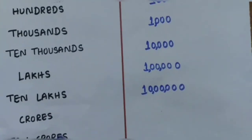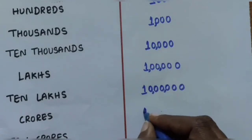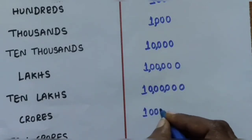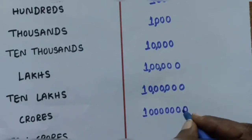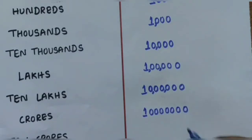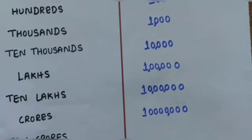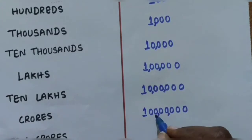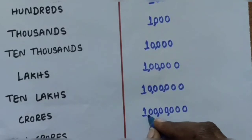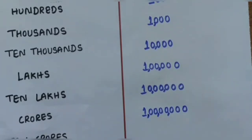Next is Crore, written as 1,00,00,000 - that is one followed by seven zeros. The first comma is applied after 3 digits, the second comma after 2 more digits for the Lakh place, and the third comma is applied for the Crore place.